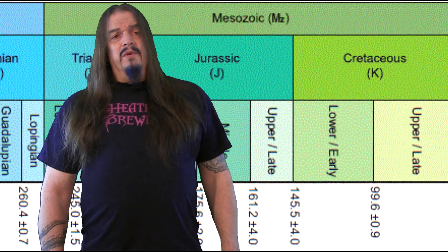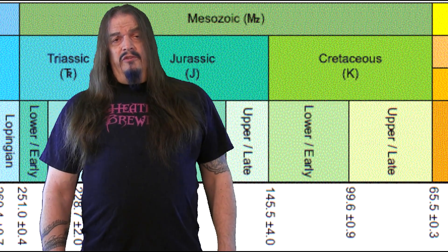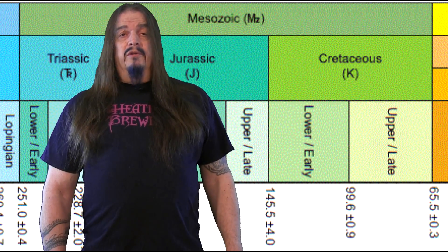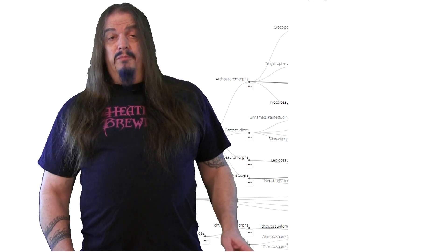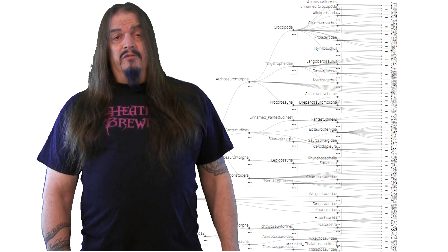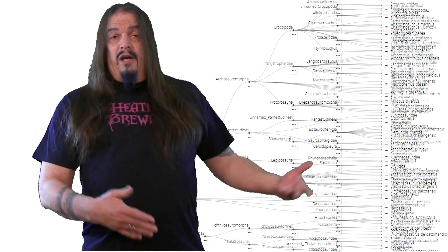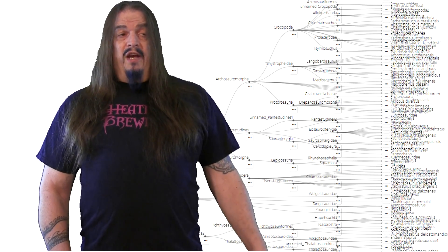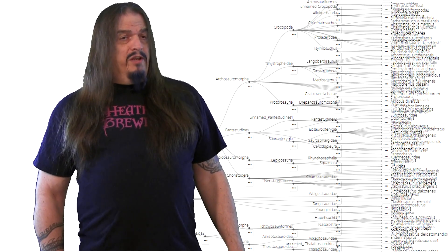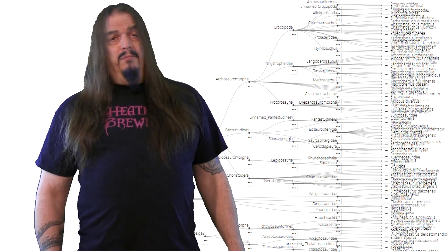The Triassic is the first of three periods of the Mesozoic era, better known as the Age of Reptiles, because that group saw the most diversification at that time. True reptiles had already divided into Lepidosaurs and Archosaurs, and now both of these main forks in the reptile family tree were flowering into new forms that were bigger, stronger, faster, and often stranger than anything before them.